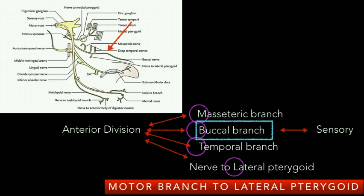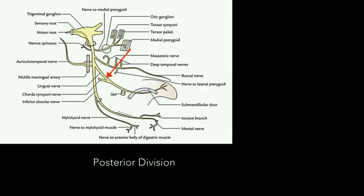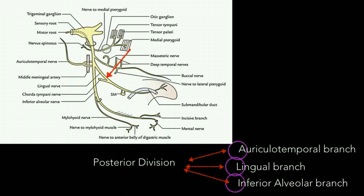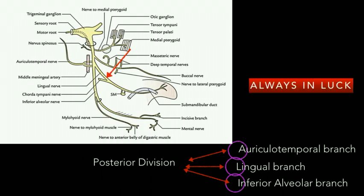The posterior division gives out three branches: the auriculotemporal branch, the lingual branch, and the inferior alveolar branch. The mnemonic to remember these is 'Always In Luck' — A from auriculotemporal branch, L from lingual branch, and I from inferior alveolar branch.